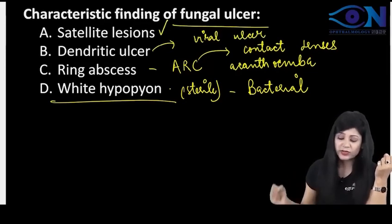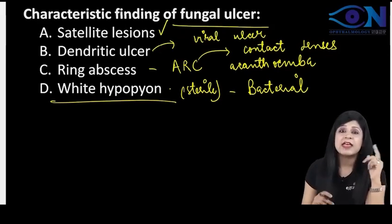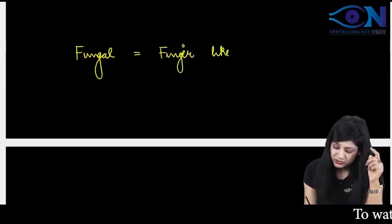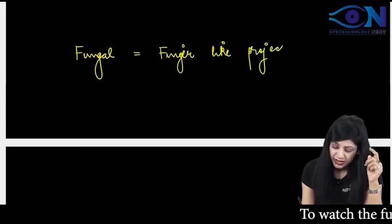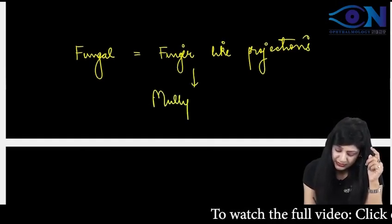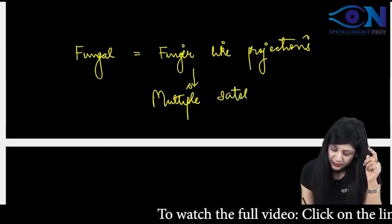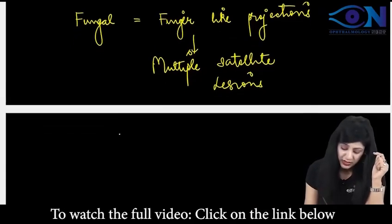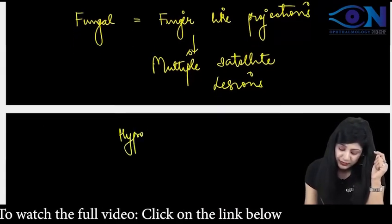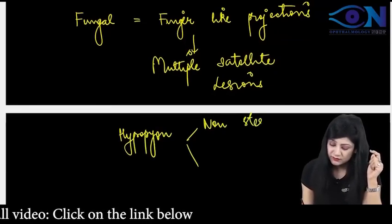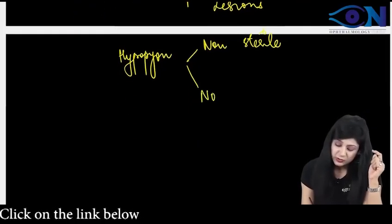By diagnosis of exclusion also, it is satellite lesions which are associated with the fungal ulcer. Always remember: F for fungal equals F for finger-like projections. Because of these finger-like projections, we will always get multiple satellite lesions. Due to these multiple satellite lesions and finger-like projections, we are also going to get a hypopion here, which will be non-sterile hypopion because it is invading the hypopion.